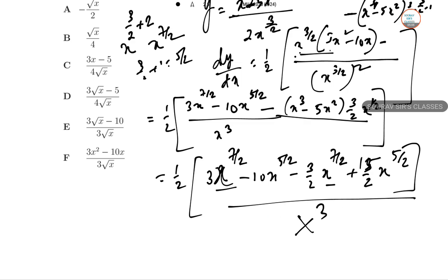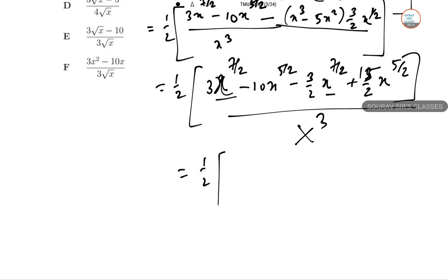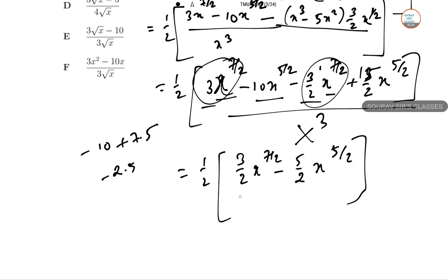Now combining like terms: the X to the power 7/2 terms — 3 minus 3/2 equals 1.5, so we get 3/2 X to the power 7/2. For X to the power 5/2: minus 10 plus 15/2 equals minus 2.5, so minus 5/2 X to the power 5/2. This is divided by X cubed. Since both 7/2 and 5/2 are present, we can factor out X to the power 5/2.